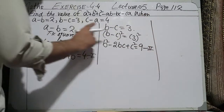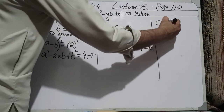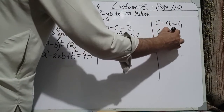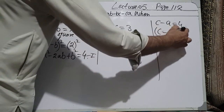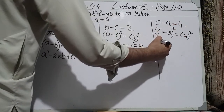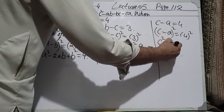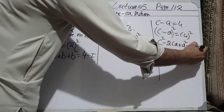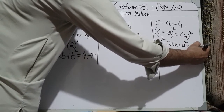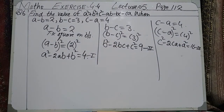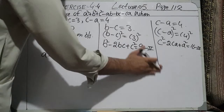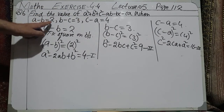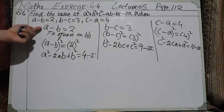For C minus A equals 4, we take the square on both sides. So C minus A whole square equals 4 whole square, giving C square minus 2CA plus A square equals 16.